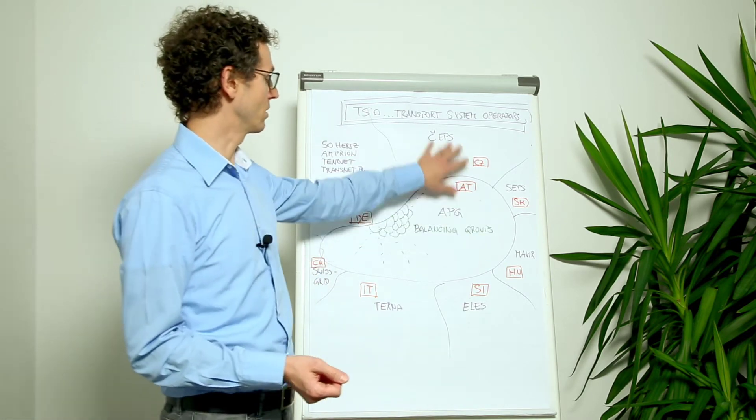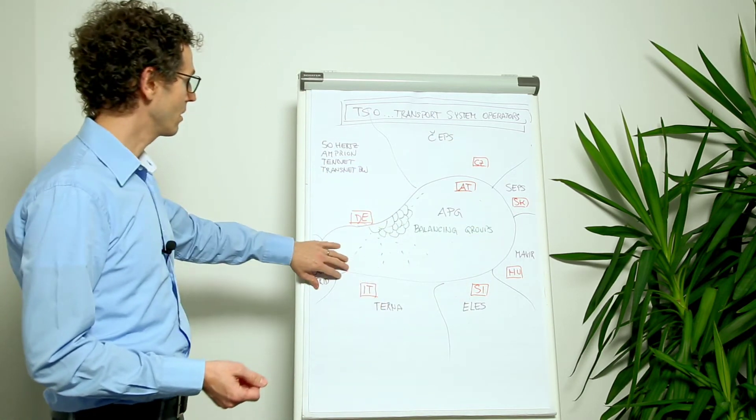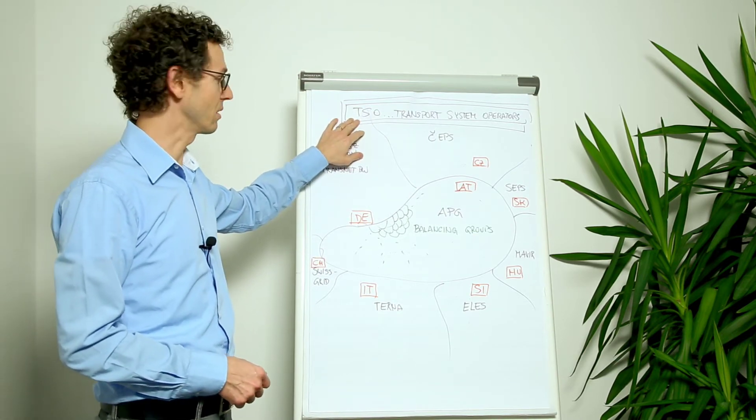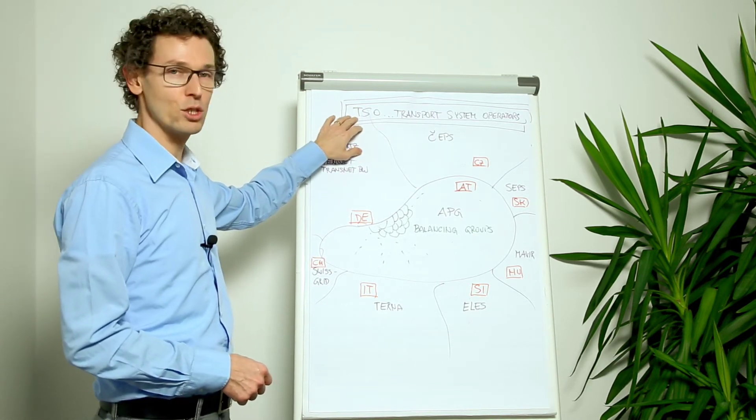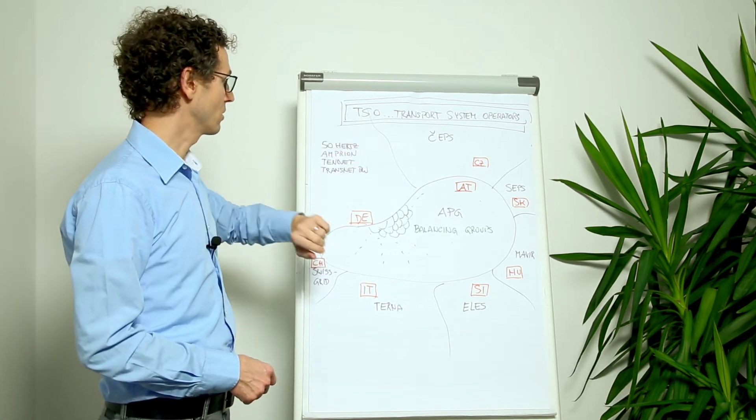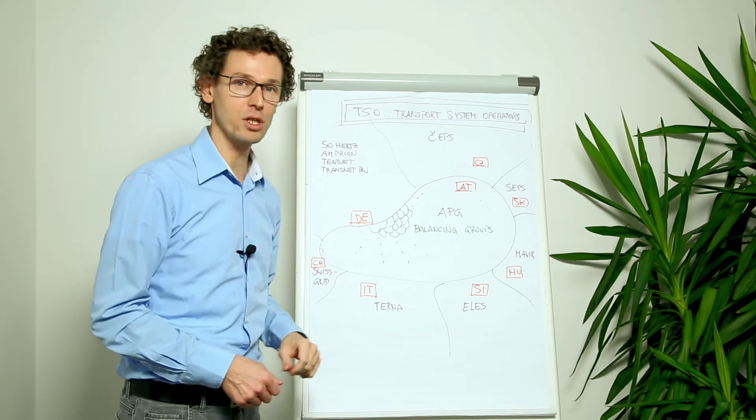Let's imagine this is Austria with its neighboring countries, and each country has one or more transport system operators who manage all the consumption and the production. So in Austria, for example, this is APG, this is the Austrian power grid.